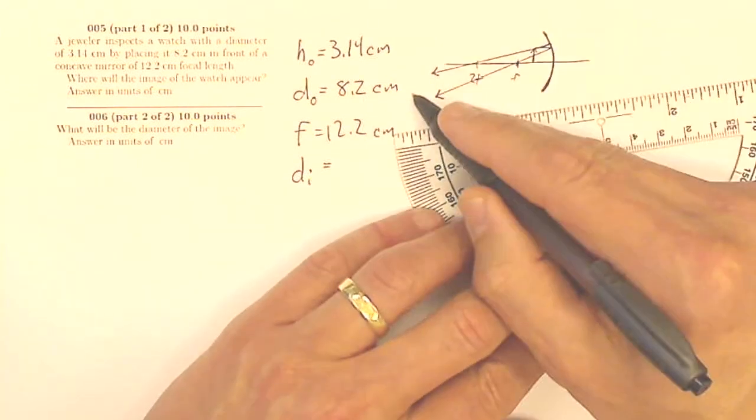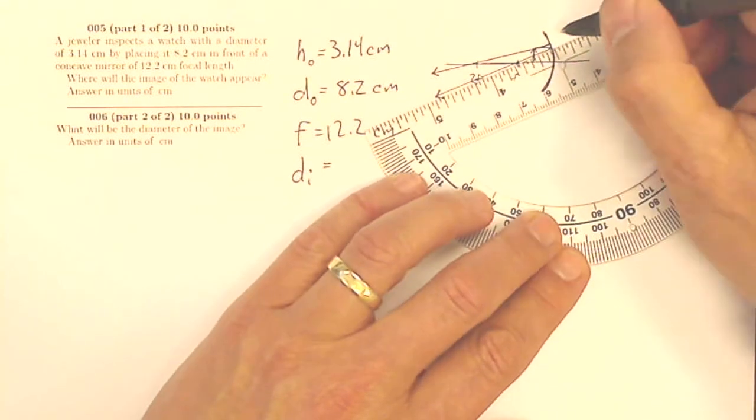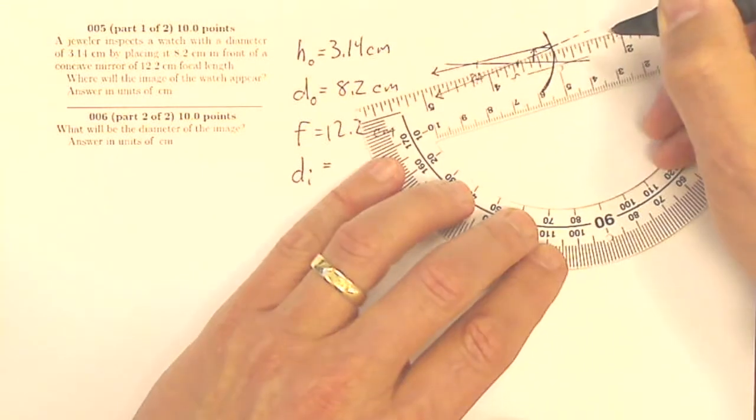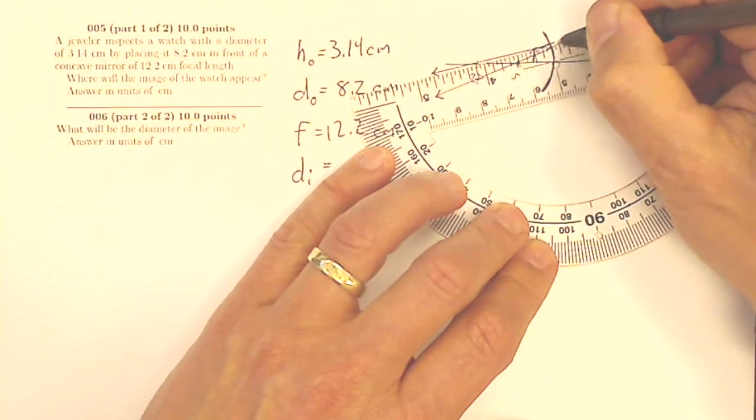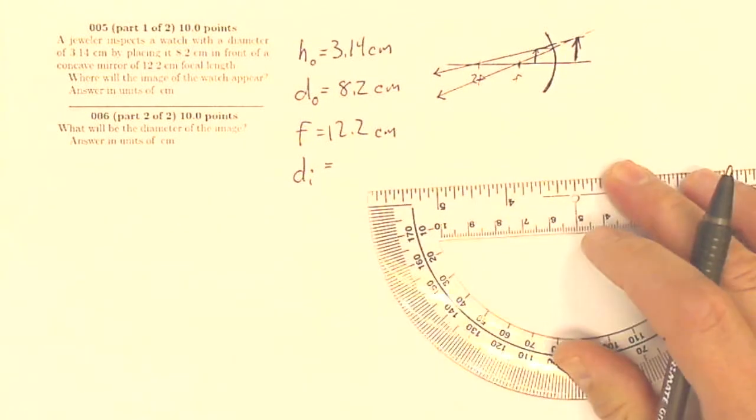Well, these rays of light are diverging over here. What that means is that they appear to come from back here somewhere. So what I'm going to get when I draw this picture is I'm going to get a larger image, upright, virtual.